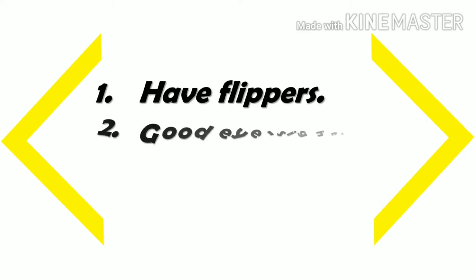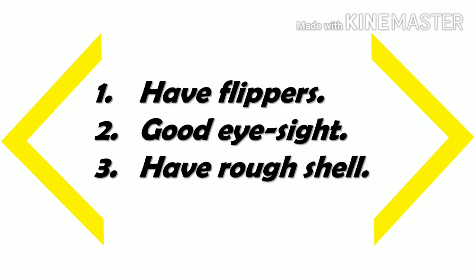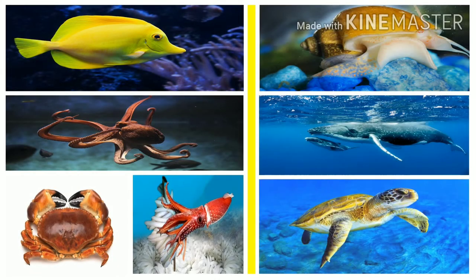Turtles. They have flippers, good eyesight, and a rough shell. Turtles are recognizable animals with a shell, four well-developed limbs, and no teeth. They have sleek, paddle-like forelimbs to propel them swiftly in water. They have good night vision, enabling them to see a light spectrum invisible to human beings. Now let us see pictures of some marine life and discuss some essential points regarding them.